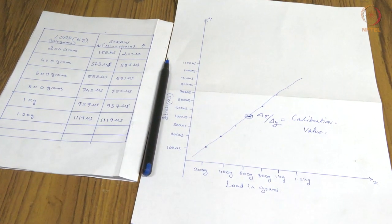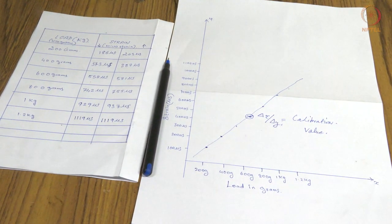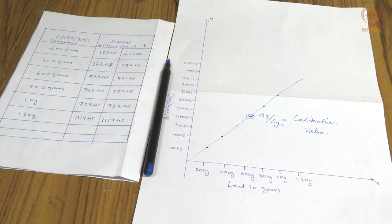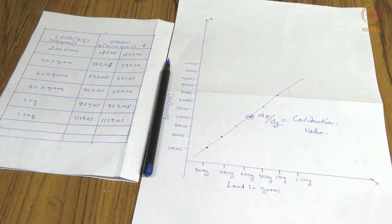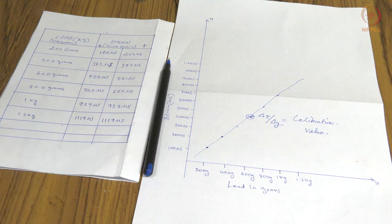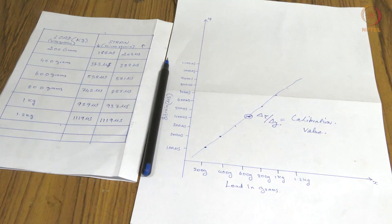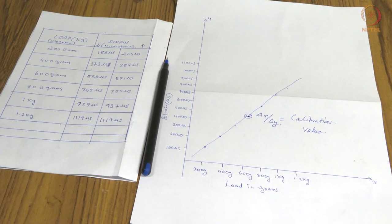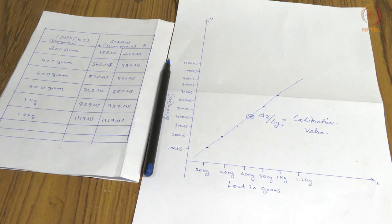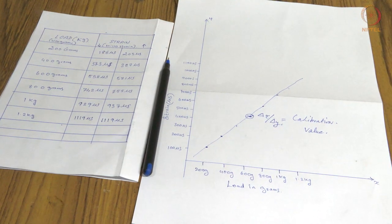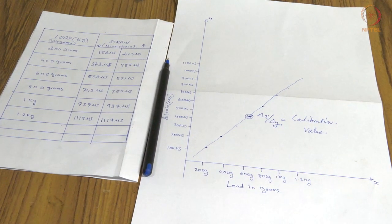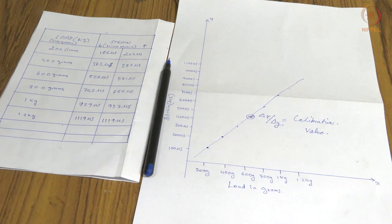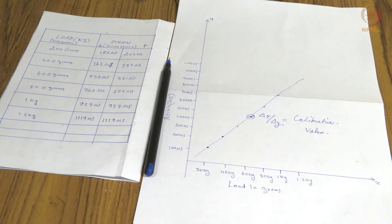We have designed and constructed the load cell, fixed all strain gauges, completed the calibration, and noted the data points on the graph. Finally, we obtained the calibration value of our customized load cell. Simple applications of load cells in real life include weighing bridges and weighing machines. That is it. Thank you.